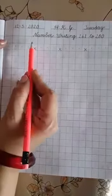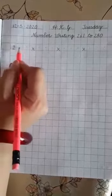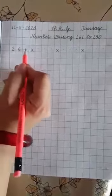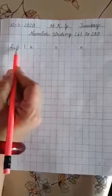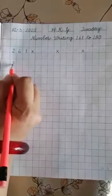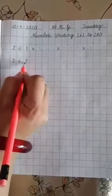Leave above boxes. Then write 2, 6, 1. Now read this number. 261. Leave one box. Then write 262.